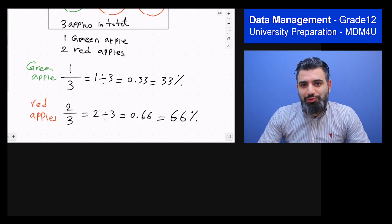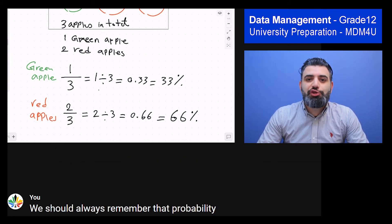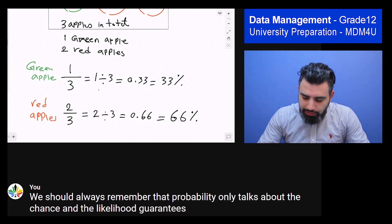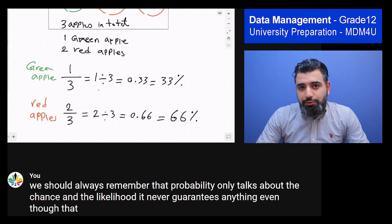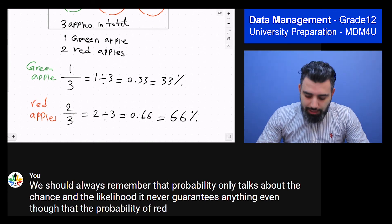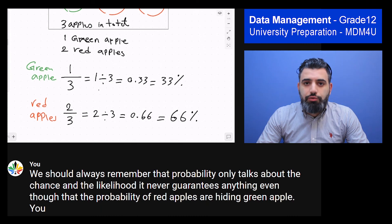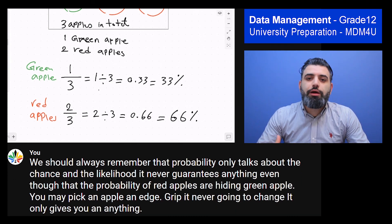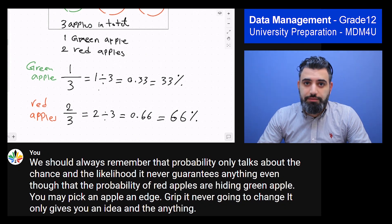We should always remember that probability only talks about the chance and the likelihood. It never guarantees anything. Even though the probability of red apples is higher than green apple, you may pick an apple and it's green. It never guarantees anything.